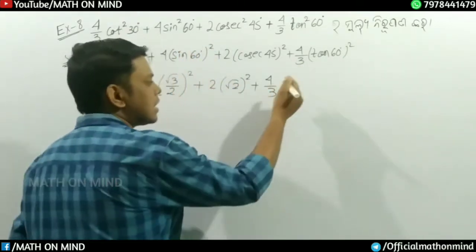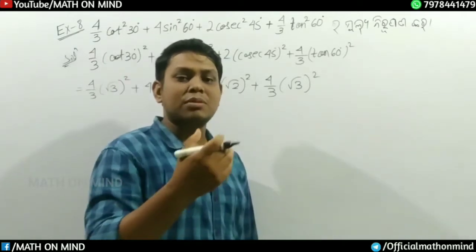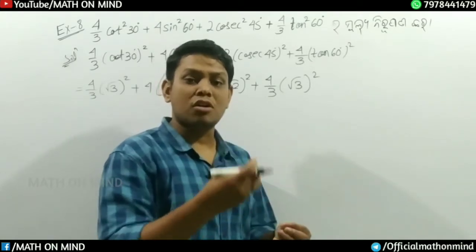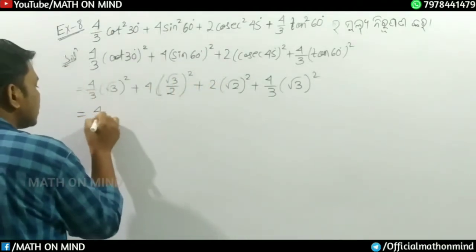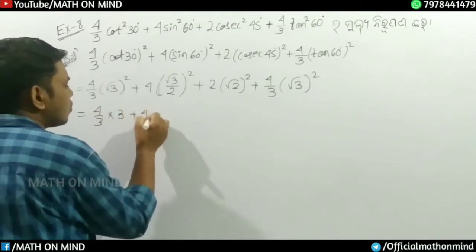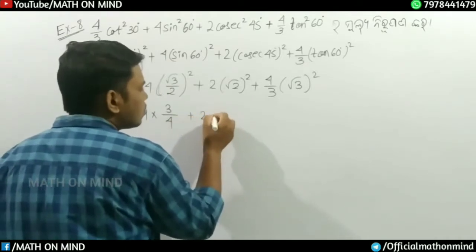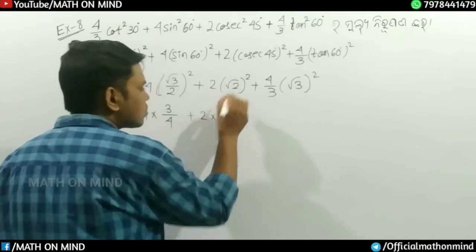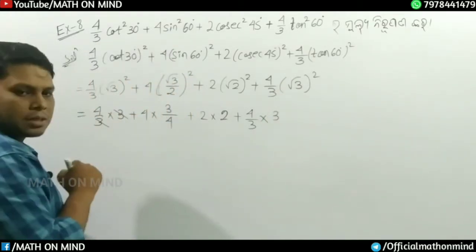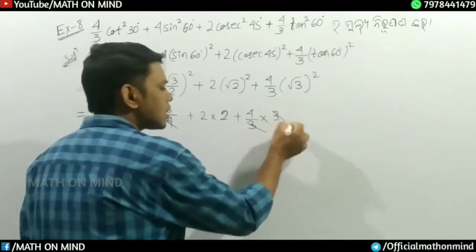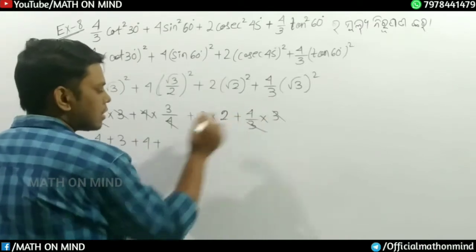This gives us (1/√2)² plus (4/3) into (60 degree)². Now 1/√3 tan 60 value, we get √3. So we have: (4/3) into (√3)² which is 3, divided by 3, giving us 4. The 3 cancels out, leaving 4 plus 3 plus 2 into 2, which equals 4 plus 4.